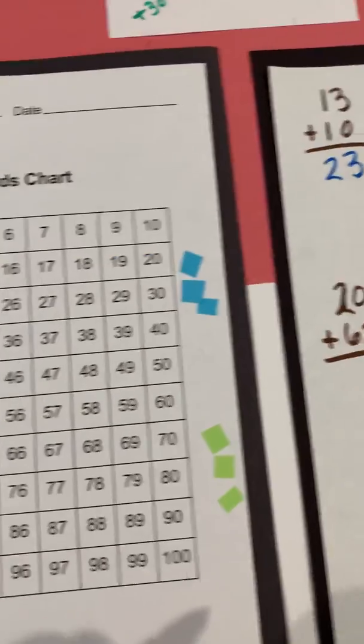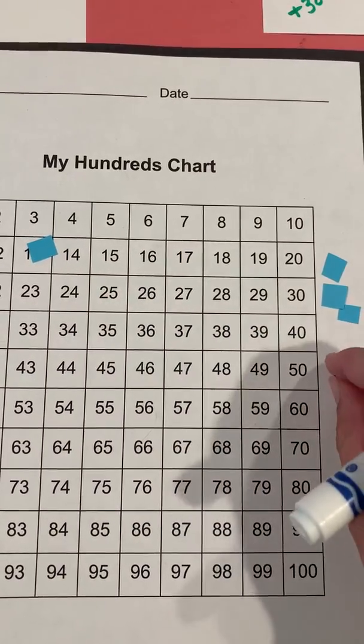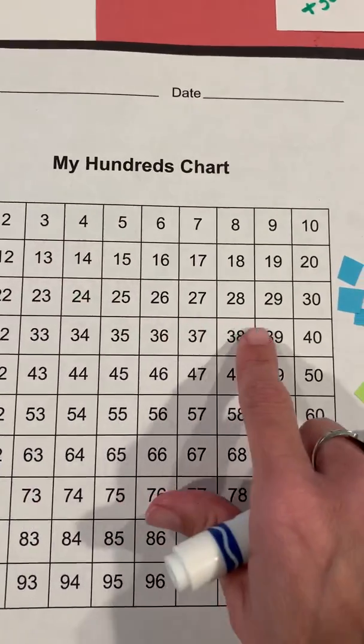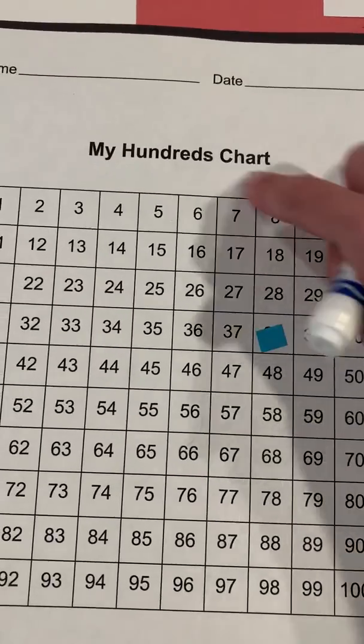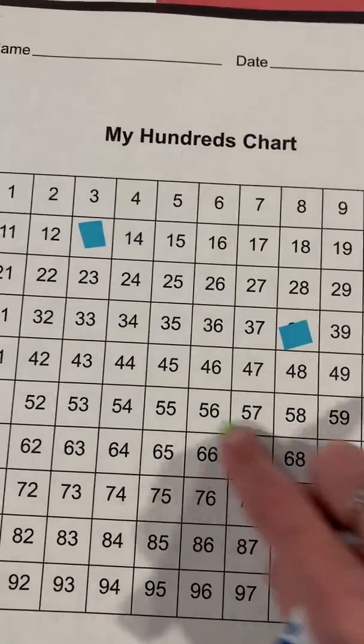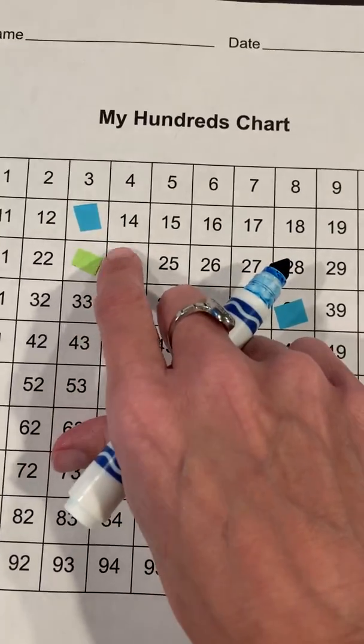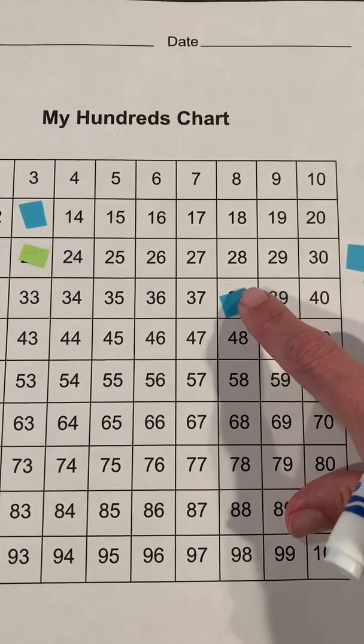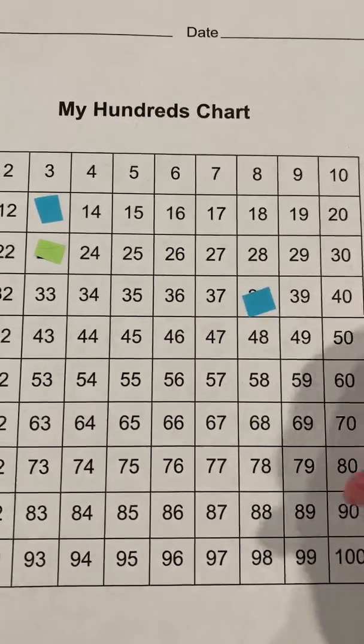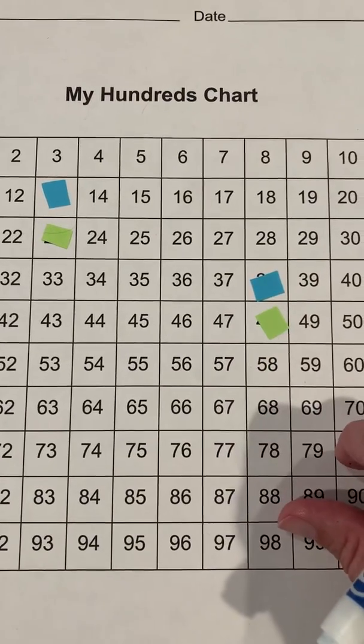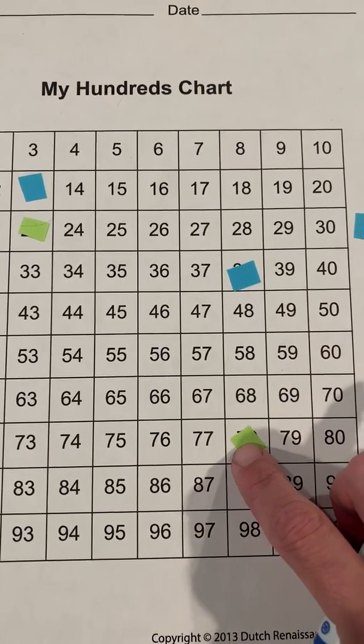So once again, I'm going to come back to my hundreds chart and I'm going to find 38, which is right here. And if I wanted to add on 40, remember just a minute ago when we added 13 plus 10, we just went down basically one level here to get to the sum of 23. So that same pattern is that I'm going to do the same thing here. Instead of having to count, I know that this would be plus 10, this would be plus 20, this would be plus 30, and this would be plus 40.